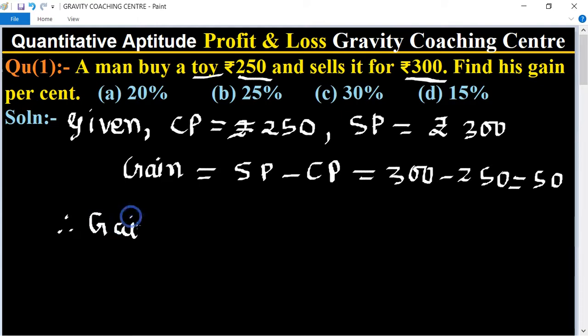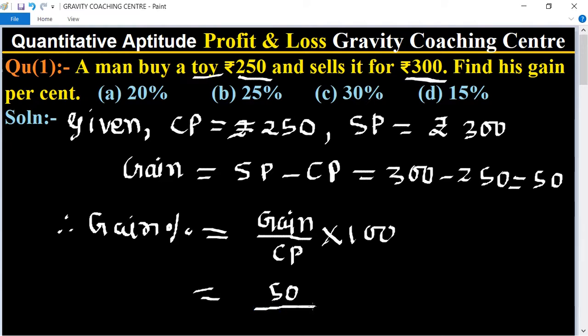Gain percent equals gain upon CP multiply hundred. So here, gain is rupees 50 and cost price is 250, multiply hundred. Zeros cancel, and by the table of 5: 5 fives is 25, and 5 twenties is 100.